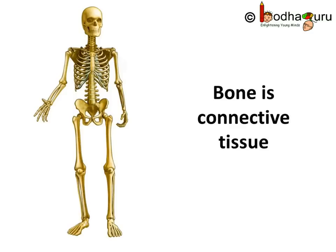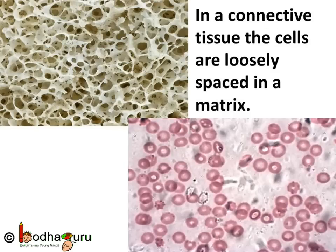Bone is also a connective tissue. How does hard, rigid bone fall into the same category as blood? They both are connective tissues. In a connective tissue, cells are loosely spaced and embedded in an intercellular matrix. The matrix may be jelly-like, fluid, dense, or rigid.